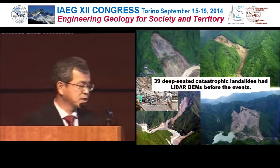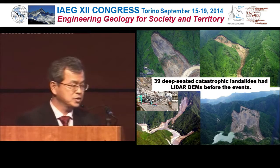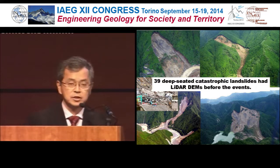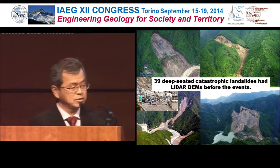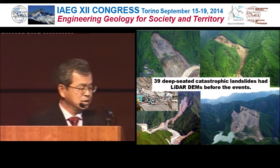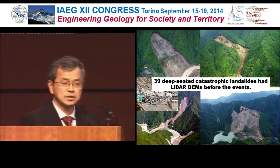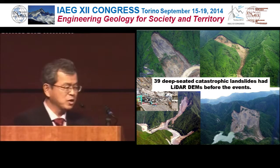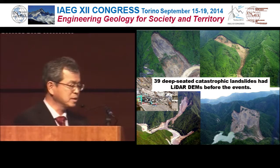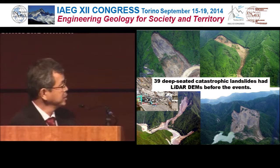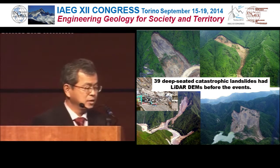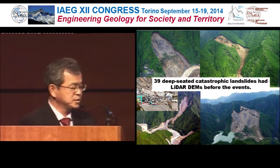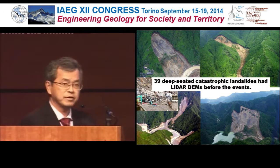Those landslides hit directly the houses, or debris avalanches threatened downstream houses, or debris rushed into the swollen river and caused a tsunami. Here, a hydropower station was completely broken. This one made a big landslide dam. Importantly, 39 deep-seated catastrophic landslides had LiDAR DEMs available before the event.